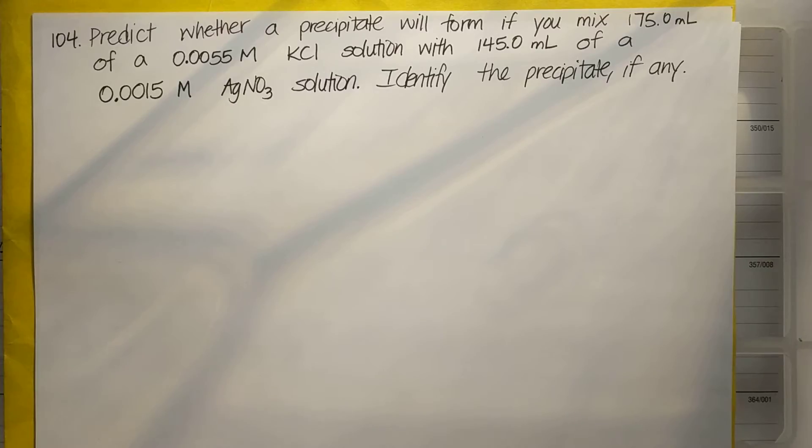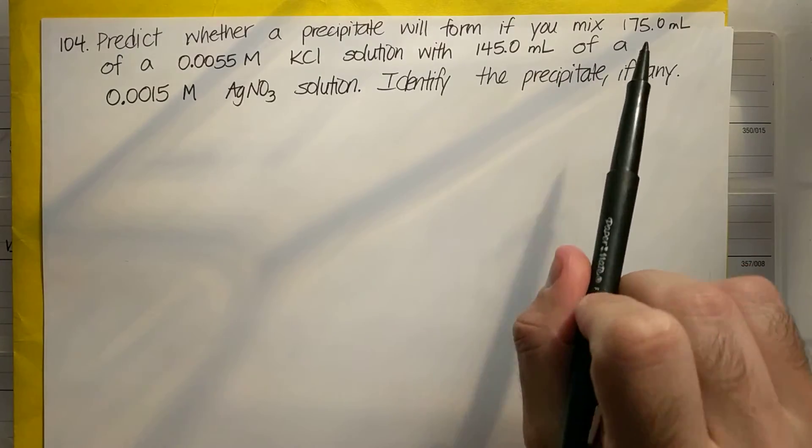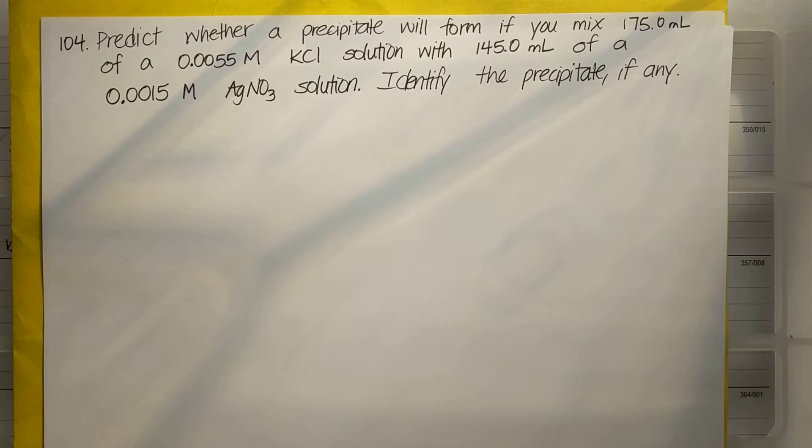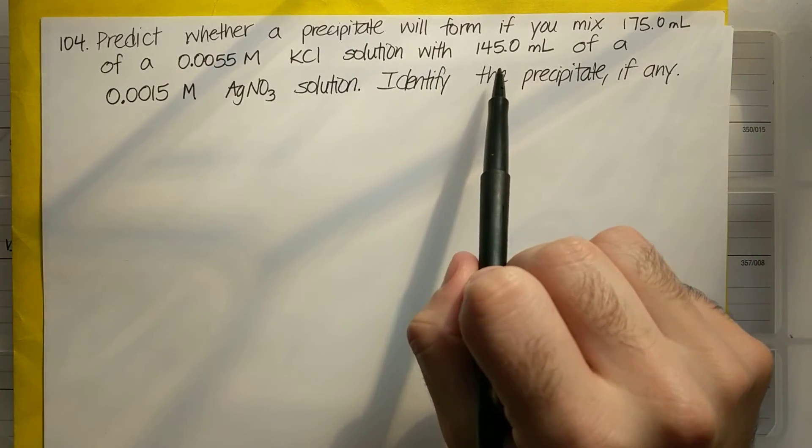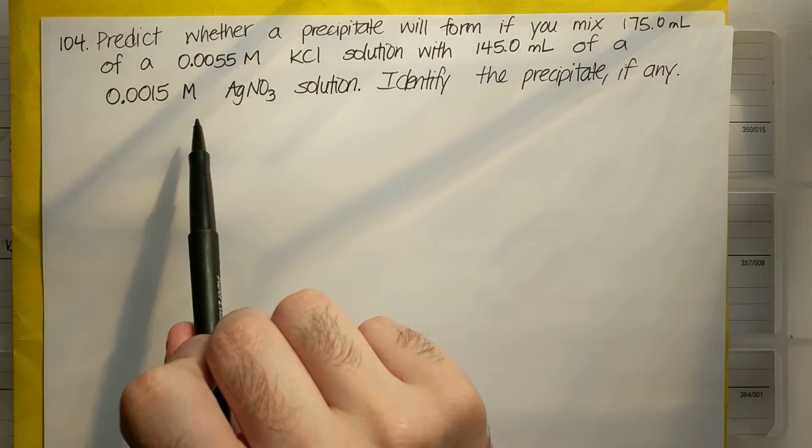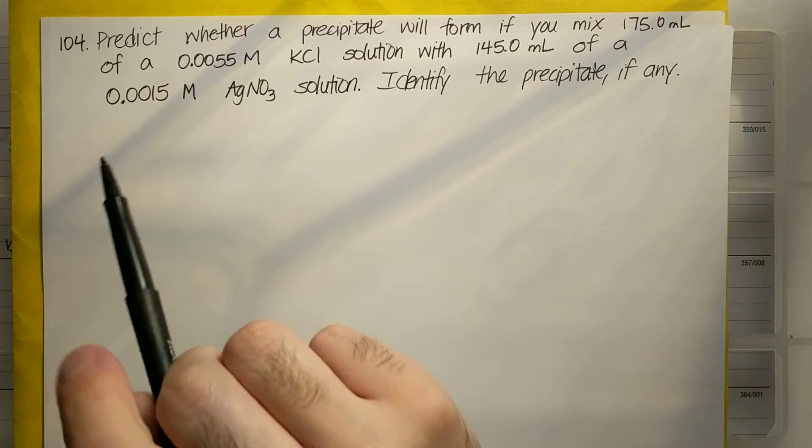All right, hey AP Chemistry. So Amy asked a question about question 104 in chapter 17. This is page 833 and it's related to precipitation and KSP and Q. So let's look at this question. Predict whether a precipitate will form if you mix 175 milliliters of a 0.0055 molar solution of KCl with 145 milliliters of a 0.0015 molar solution of AgNO3. Identify the precipitate if any.